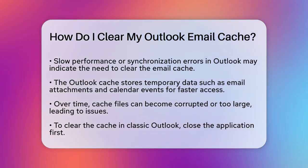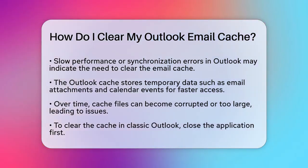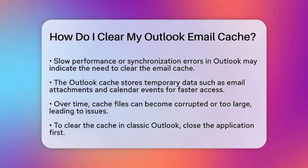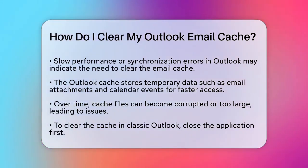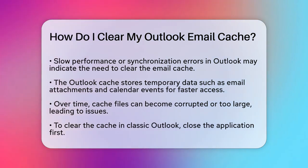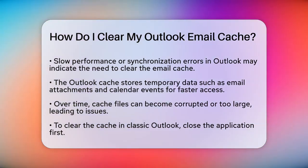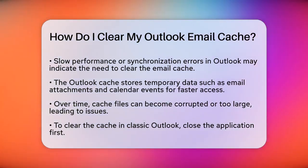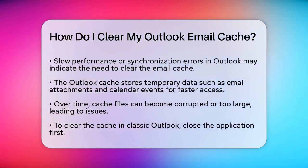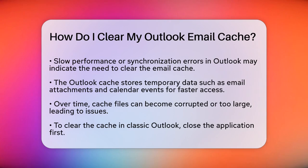Clearing cache in Classic Outlook. To clear the cache in the Classic Outlook application, start by closing Outlook. Then press the Windows+R keys to open the Run dialog box. Type %LocalAppData%\Microsoft\Outlook\RoamCache and press Enter.